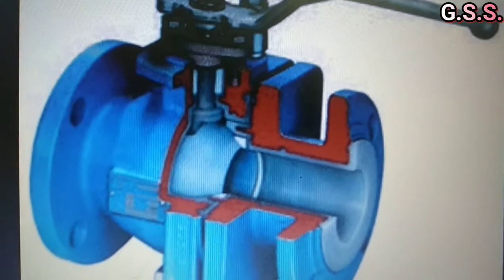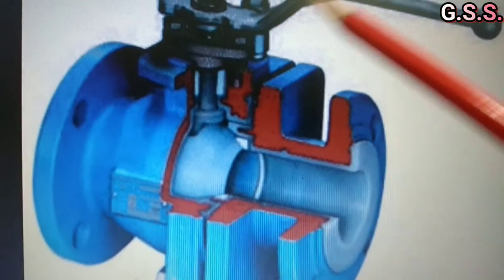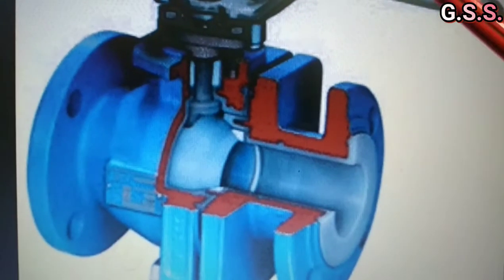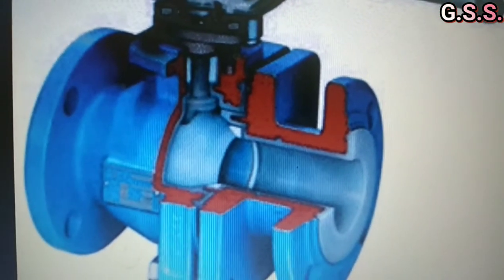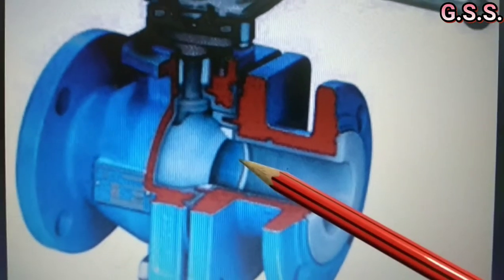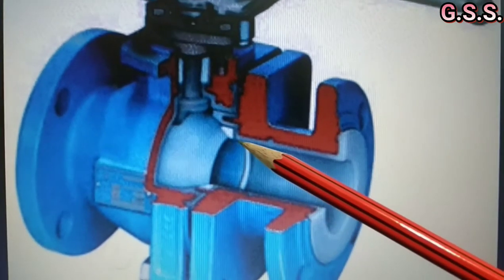You can see this is a picture of a ball valve. It is a ball and this is the lever. By turning the lever a quarter turn, that means 90 degrees, the ball rotates. Now it is in open condition. When the ball rotates, the valve will be in closed condition.